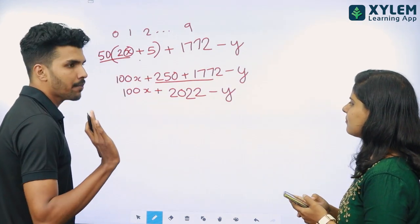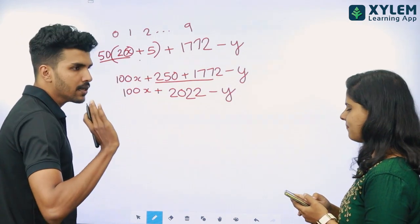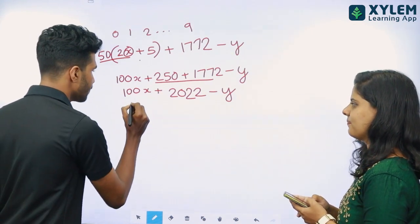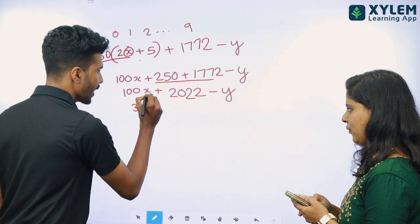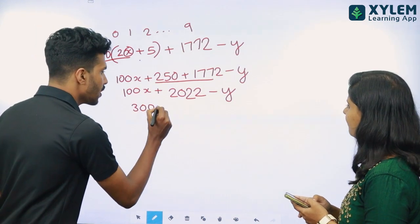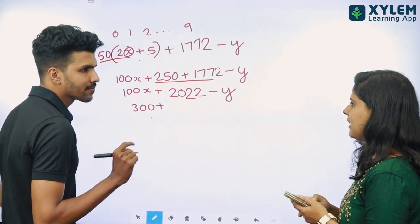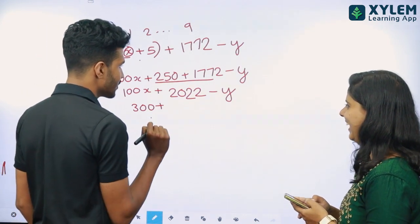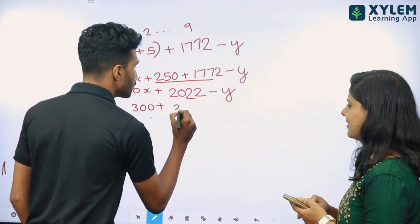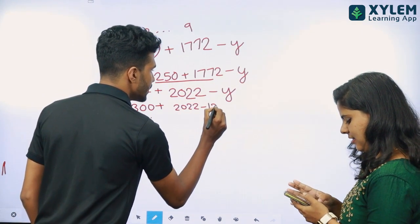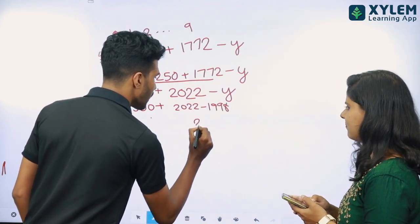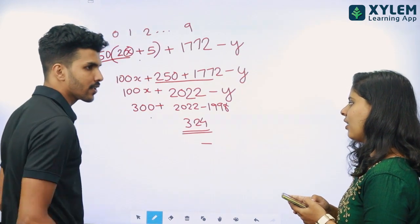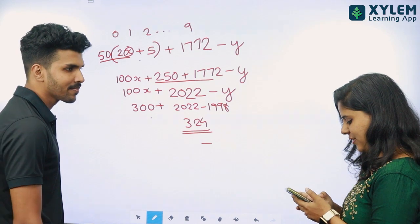We will see a three-digit number. Three-digit number. We will see the mobile number. Three hundred. Three hundred. What is the last time? 1998. About 2022. 1998. Now we will see 24. 300 plus 24 is 324. That's the title. That's 324.